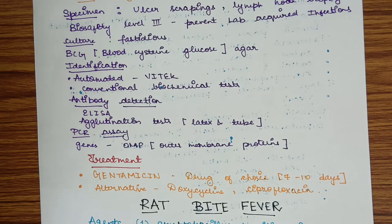Treatment of tularensis: gentamicin is the drug of choice, similar to plague treatment. Alternative medications are doxycycline or ciprofloxacin.